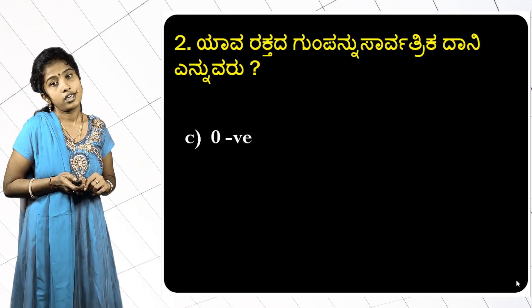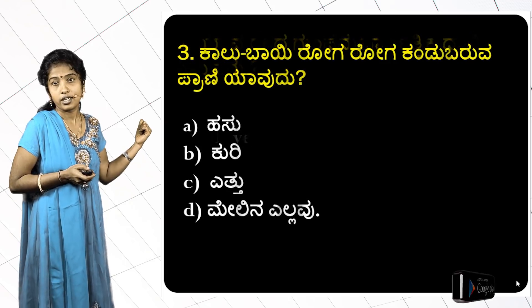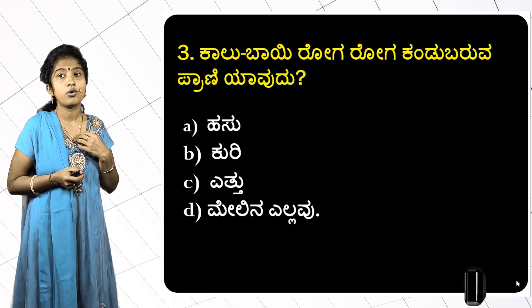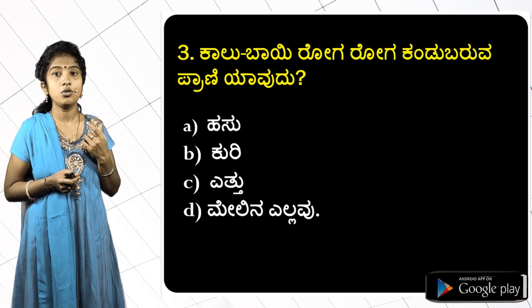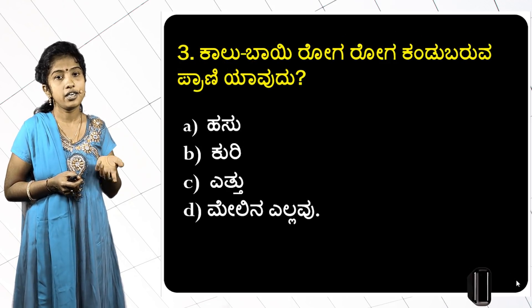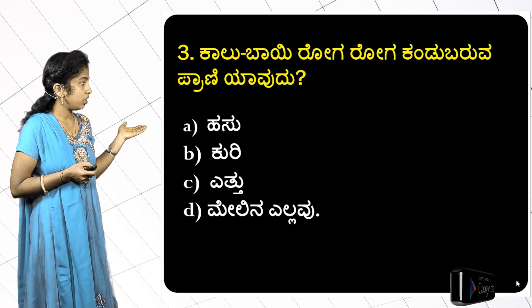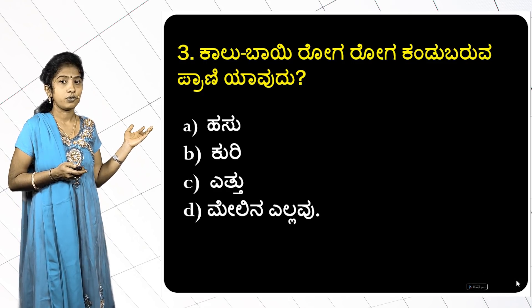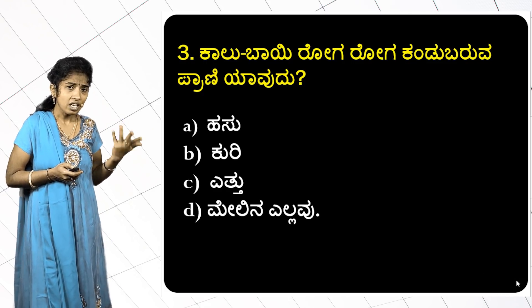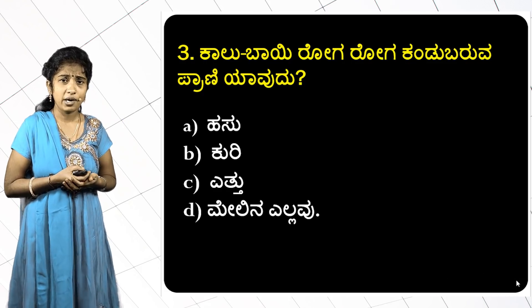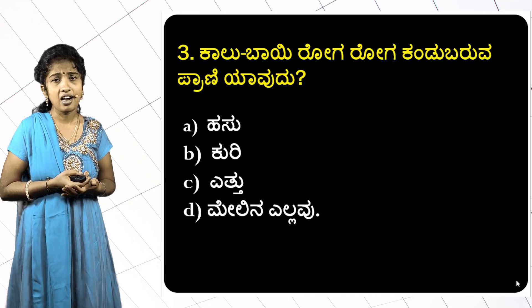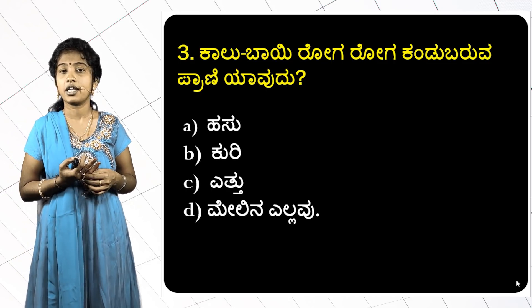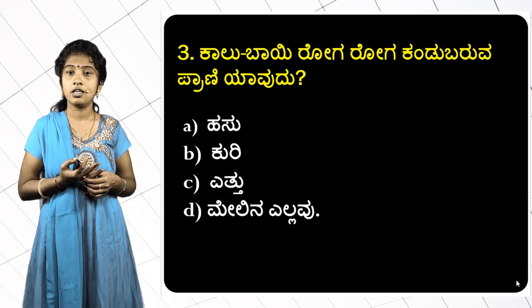So the correct answer is O negative as universal donor. Next question: which animal is affected by foot-and-mouth disease? The options are cow, sheep, ox, and others.